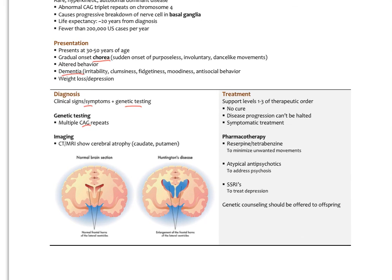Treatment for Huntington's is supportive — levels one and three — as there is no cure and disease progression cannot be halted. Treatment is symptomatic only. To minimize unwanted movements, reserpine (an older medication previously used in hypertension that blocks dopamine) can be used. Atypical antipsychotics — second-generation, with fewer Parkinson-like effects — can address psychosis accompanying Huntington's. SSRIs address depression, and genetic counseling should be offered to offspring given their higher risk.